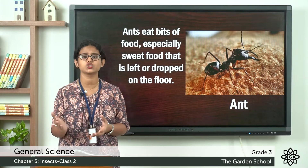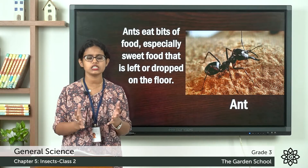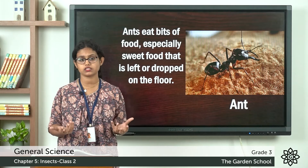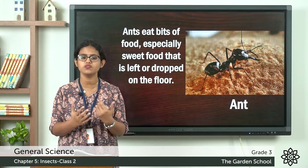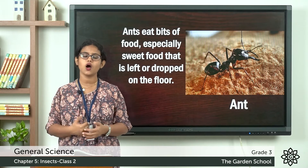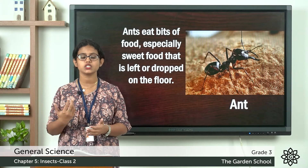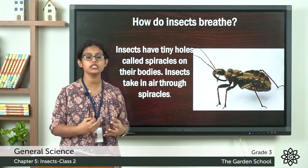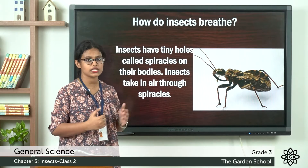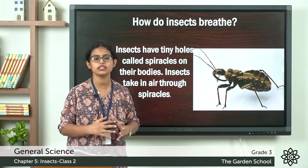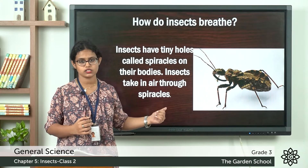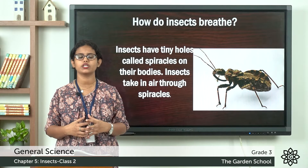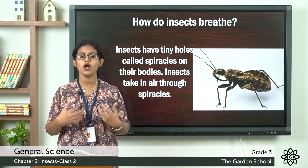Mosquitoes also carry germs and spread diseases. To recap the eating habits of different insects: some feed on nectar, that sweet liquid present on flowers; some feed on the blood of animals and humans; and some feed on other insects. In the last class we also learned how insects breathe — through tiny holes in their body called spiracles. Air enters through the spiracle tubes and reaches all parts of the insect's body.